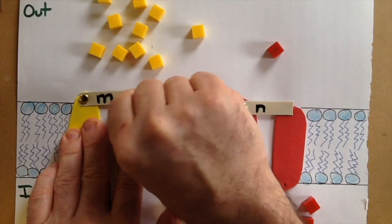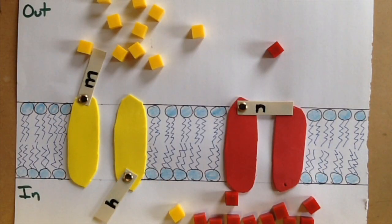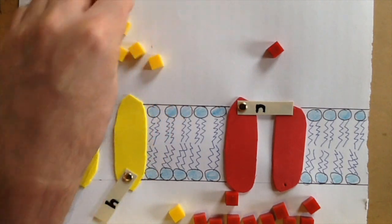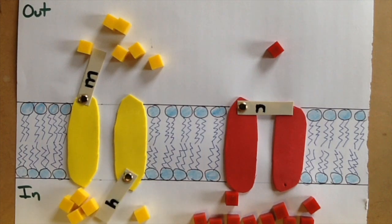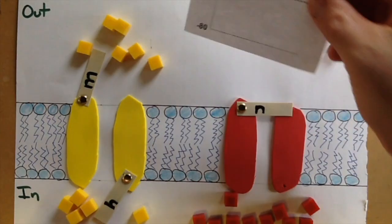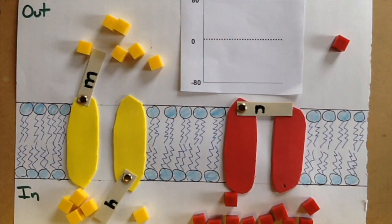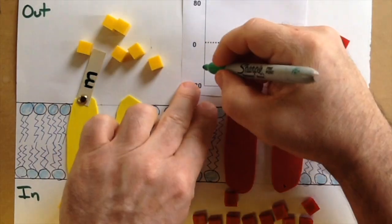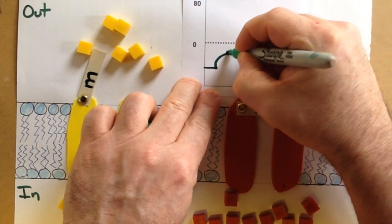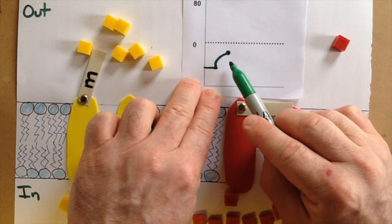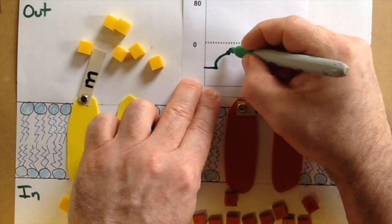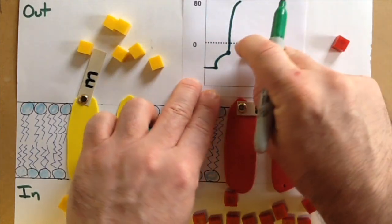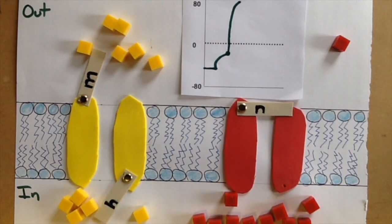What we're going to do at threshold is the M gate is going to open first. What will occur is that positive charges will begin to move into the cell. So sodium ions will move into the cell, causing the cell to be more positive. If we think about what's happening on our action potential, we have reached threshold and arrived at our first inflection point, where the M gate and the N gate are triggered. The M gate is opening first, positive charge is moving into the cell, and the cell is now becoming depolarized.